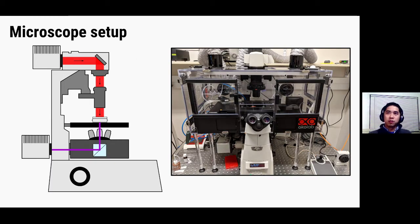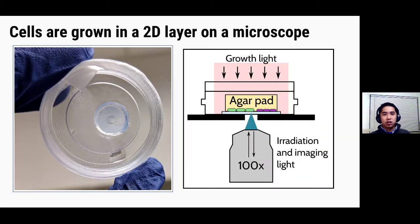So to overcome this problem, we have developed a way to grow and film cells using long-term time-lapse microscopy. The picture on the right shows our microscope in the lab and the cartoon on the left shows the schematic of its components. Let's start by taking a look at the sample first. So to overcome issues such as cell-cell shading, we grow cells in a two-dimensional layer on an agar pad.